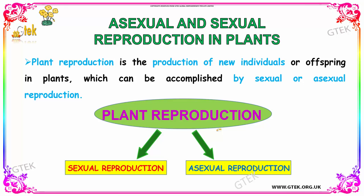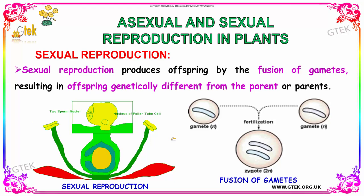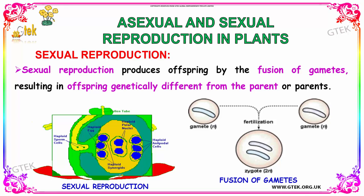Plant reproduction is divided into Sexual Reproduction and Asexual Reproduction. Sexual Reproduction produces offspring by the fusion of gametes, resulting in offspring genetically different from the parent or parents. Here you can see the Zygote, which is formed through the fertilization process.